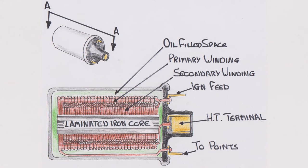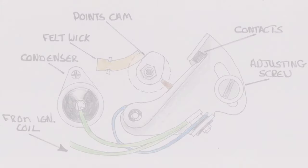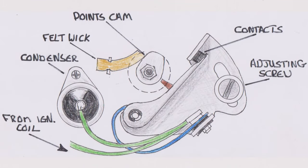Ignition coils contain two sets of windings. A primary winding that has a 12 volt power supply from the ignition switch and grounds through the points. When current is flowing through the primary winding to ground, it creates a magnetic field, and the secondary winding is sitting in that field.